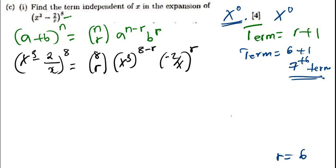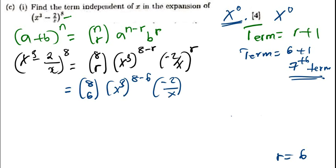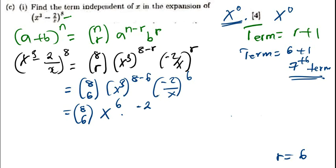Now I come back here and plug in the value of r. r is now 6. So x to the power 3, then 8 minus r is 6, so 8 minus 6 is 2, times x to the power 6. Then this is also negative 2 over x — I open the brackets, which is going to give me negative 2 raised to the power 6, divided by x to the power 6.